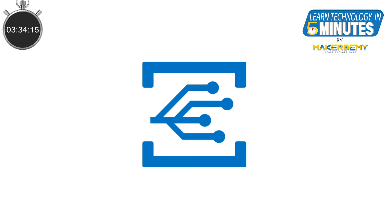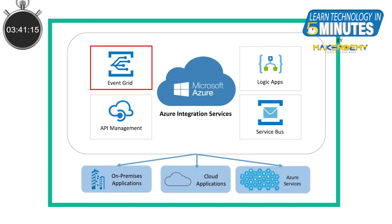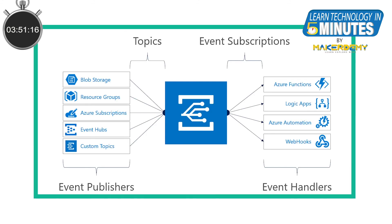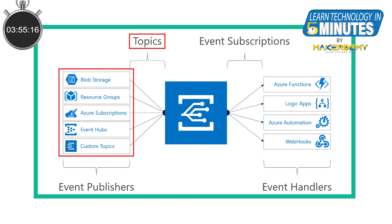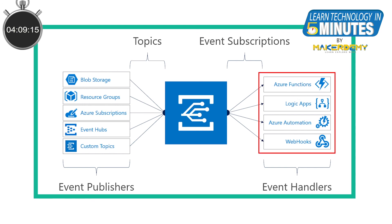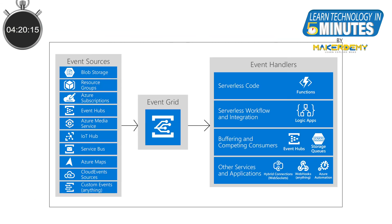Event Grid is a service that was mainly created to route real-time events. These are for creating event-based applications. It simplifies event-based application development with a publish-subscribe model. For example, in an event-based application, we have events coming from an event source under a topic. Whenever there is an event coming into a topic, you can subscribe to that topic and handle those events within your application. Event handlers handle these events, and event grid consists of these components. It is used to build better and more reliable applications through reactive programming.